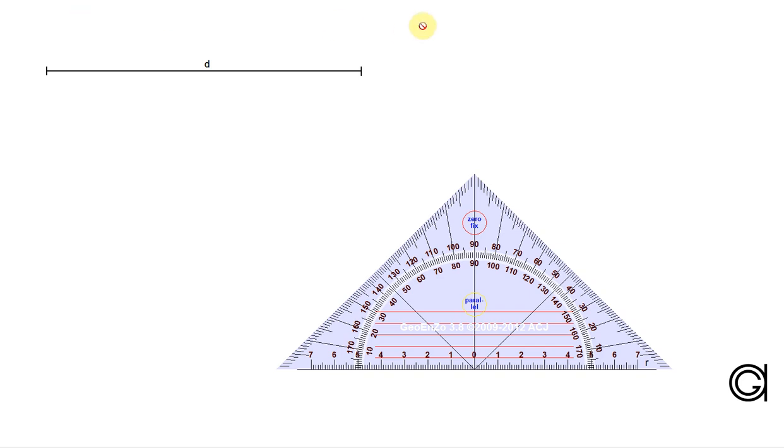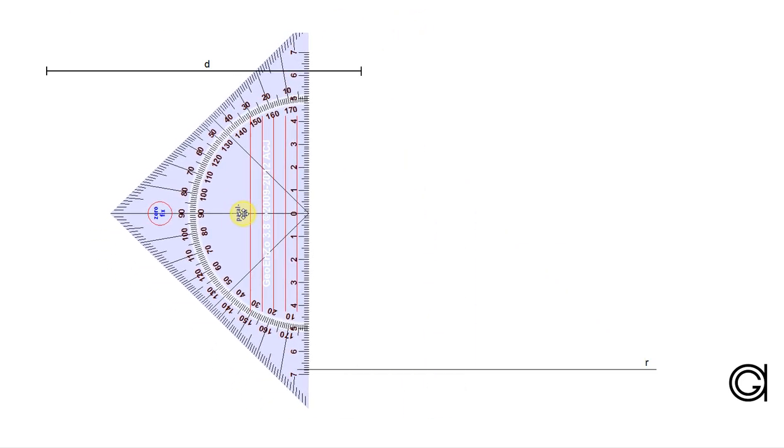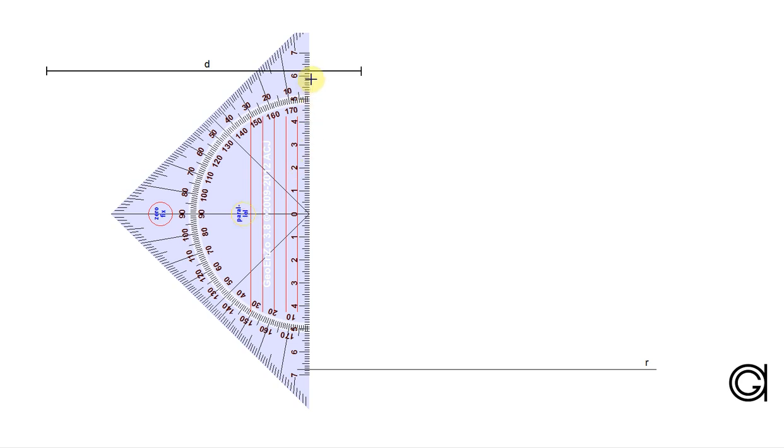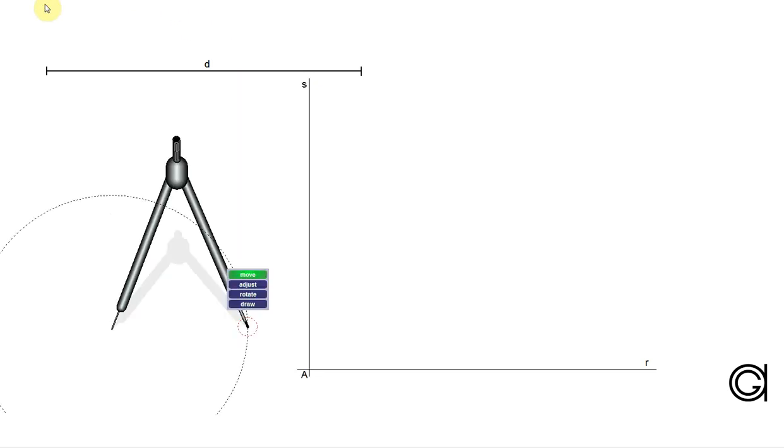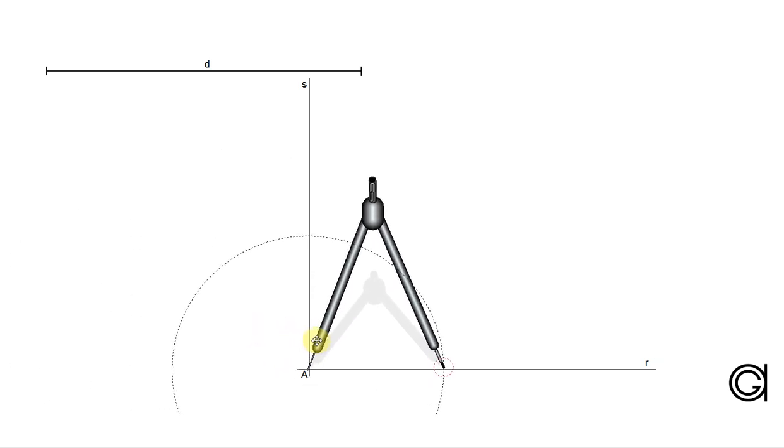The next step is to draw a perpendicular line on the left side of this line at 90 degrees, which we will call line S. Where the two lines intersect will be our first vertex of the square, A.